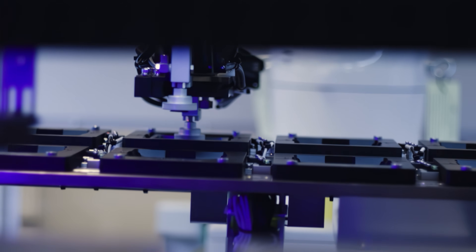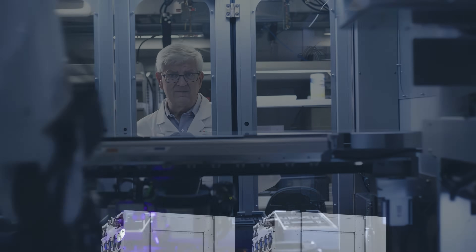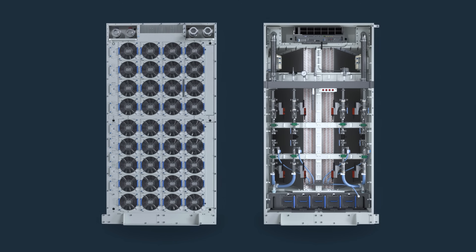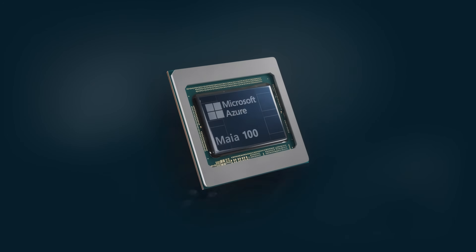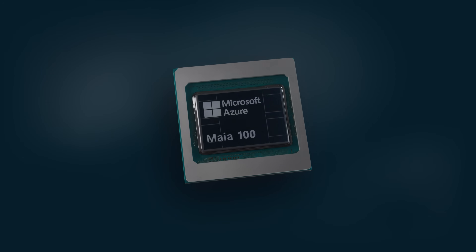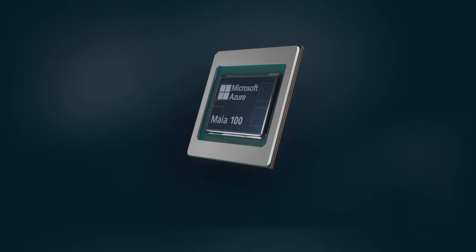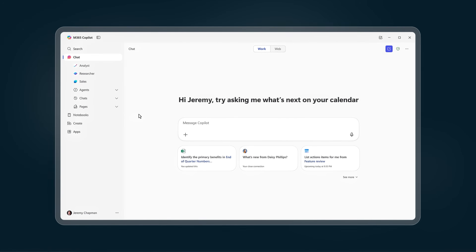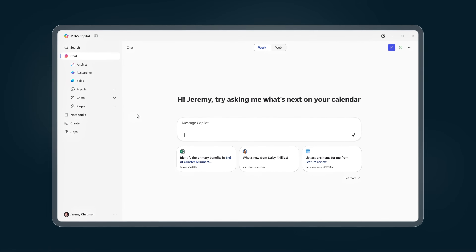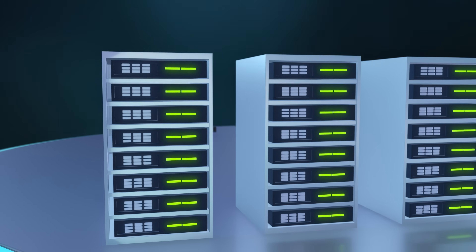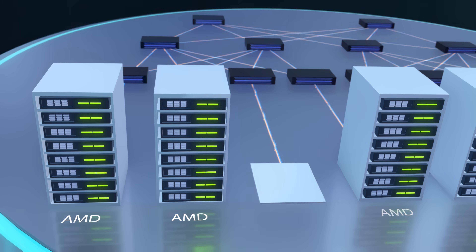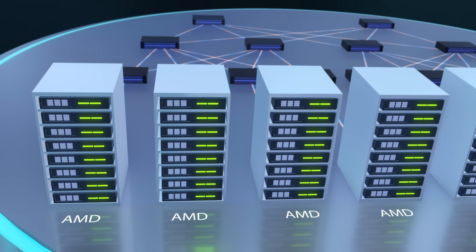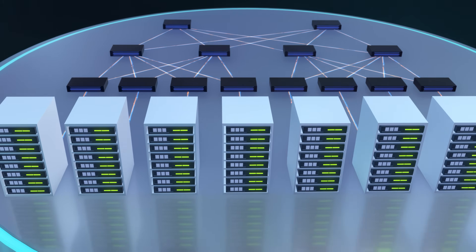We lead in terms of capacity, with tens of thousands of GB200 GPUs in our massive purpose-built data centers. To take advantage of the best cost performance, we have developed advanced liquid cooling to run our AI infrastructure. This includes our in-house chip, Maya, which is currently used to efficiently run our large-scale first-party AI workloads, including some of our Copilot services. Our systems are modular, allowing us to deploy NVIDIA and AMD GPUs on the same InfiniBand network infrastructure to meet specific demand.